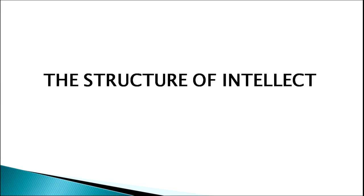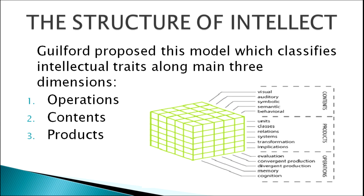Another theory under this viewpoint is the structure of intellect model, proposed by Guilford. Guilford classified intellectual traits along three main dimensions: operations, contents, and products. This is how we define intelligence as per Guilford.